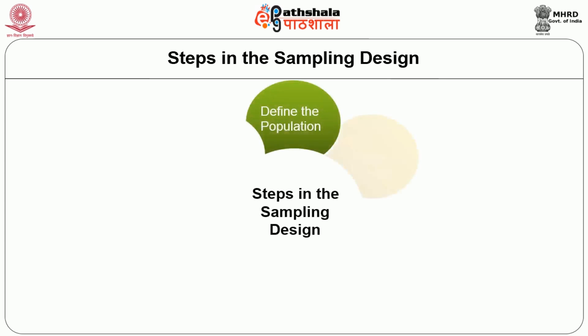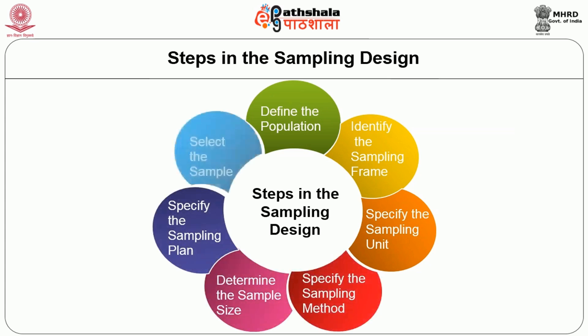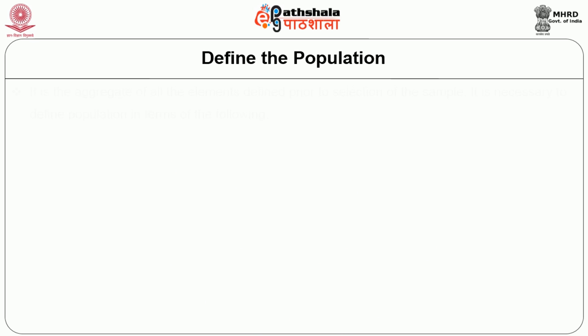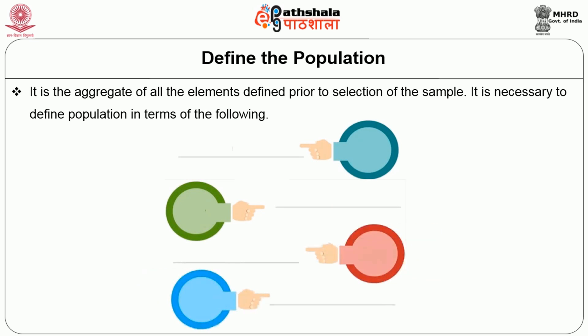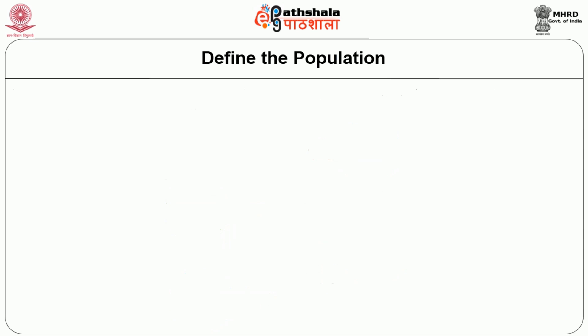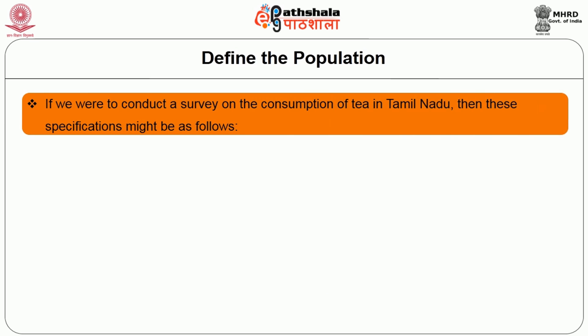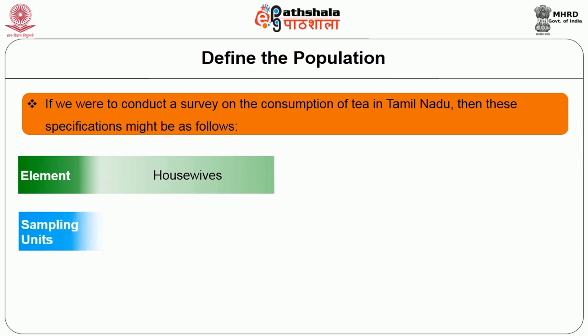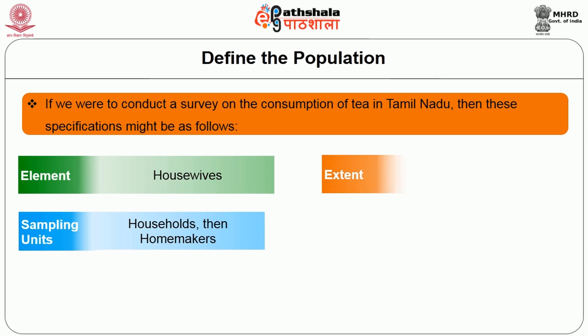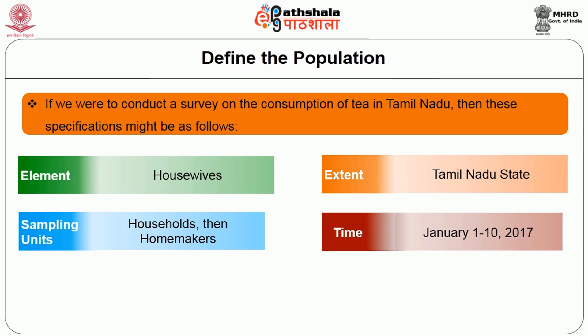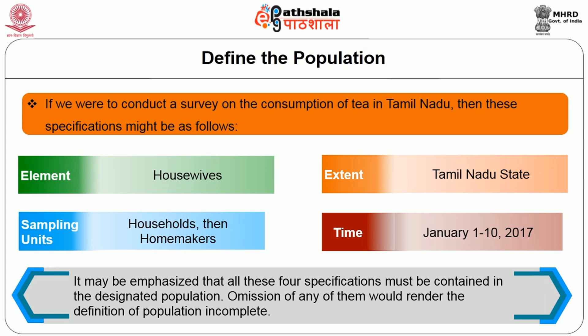Steps in Sampling Design: there are seven steps involved in this process. The first step is to define the population — the aggregate of all elements defined prior to selection of the sample. It is necessary to define population in terms of: the elements, the sampling units, the extent, and the time. For example, in a survey on consumption of tea in Tamil Nadu, the element is housewives, the sampling unit is household and homemakers, the extent is Tamil Nadu, and the time is January 1st to 10th, 2017. All four specifications must be contained in the designated population; omission of any one would render the definition incomplete.